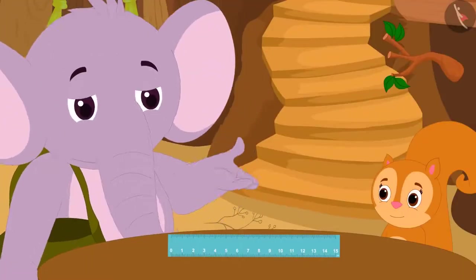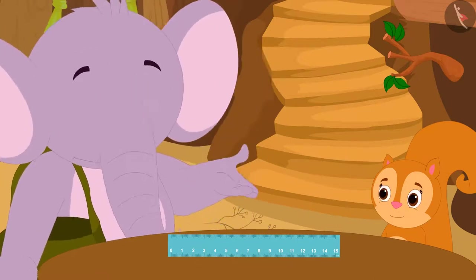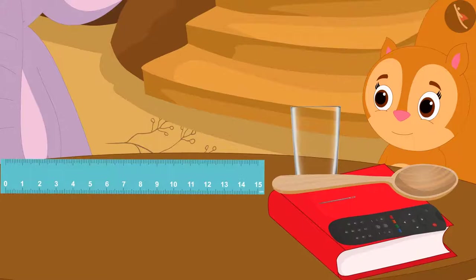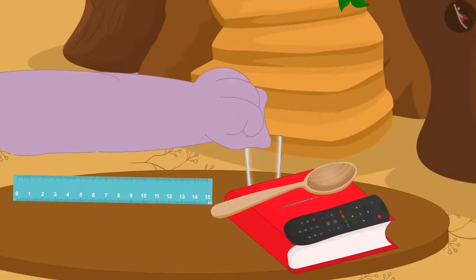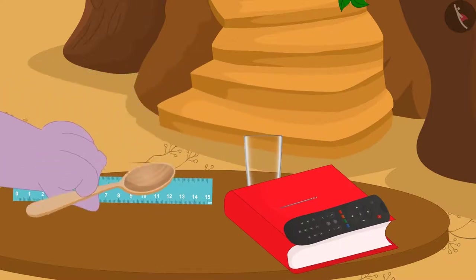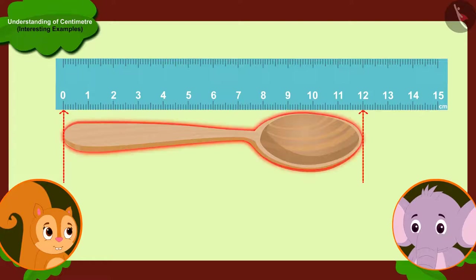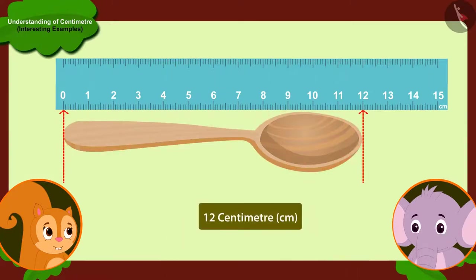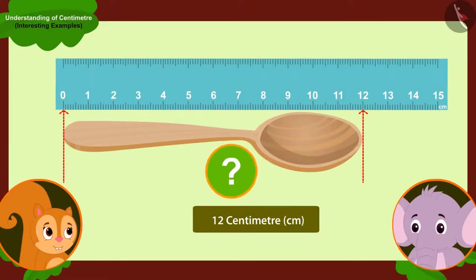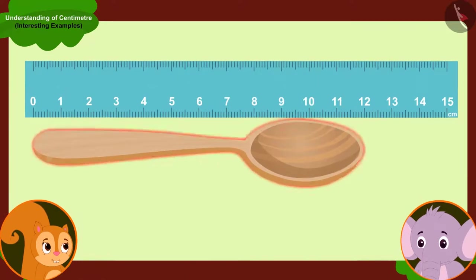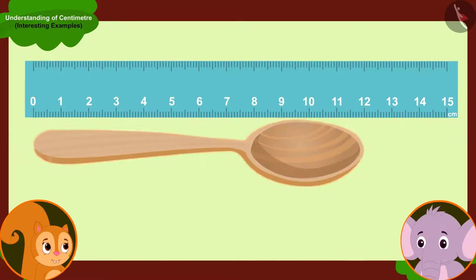Appu then asked Chanda to collect some items from her house whose length she wanted to measure. Chanda immediately collected those items and brought them. Appu first picked up Chanda's spoon. He placed the spoon next to the ruler and said, look, your spoon is twelve centimetres long. Chanda could not understand how Appu found this out. Appu said to her, whenever you have to measure the length of any object,